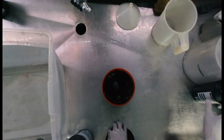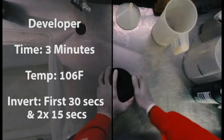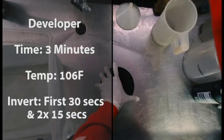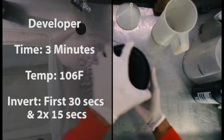After we've exchanged the water three times, we're going to add that developer in there. The developer is going to be for three minutes. Temperature should be at 106 Fahrenheit. And the first 30 seconds, we're going to invert it.